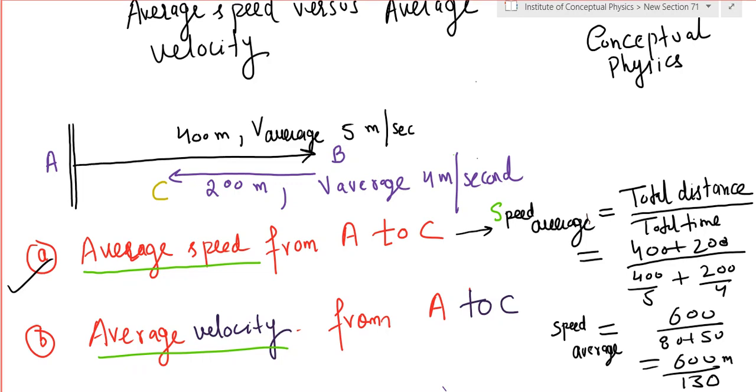Alright, so yet another problem area for students giving J mains and NEET, and in fact in school itself. The problem area is there is a confusion between the difference of average speed and average velocity.